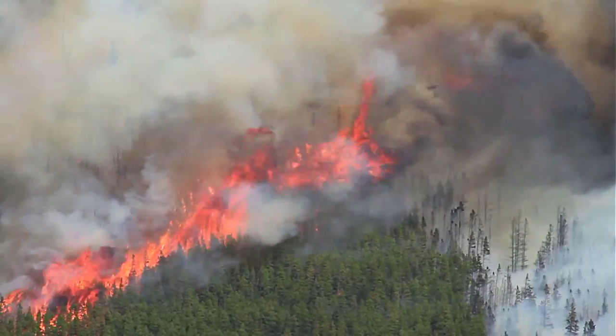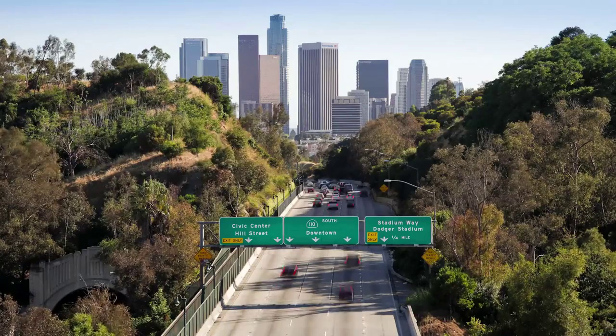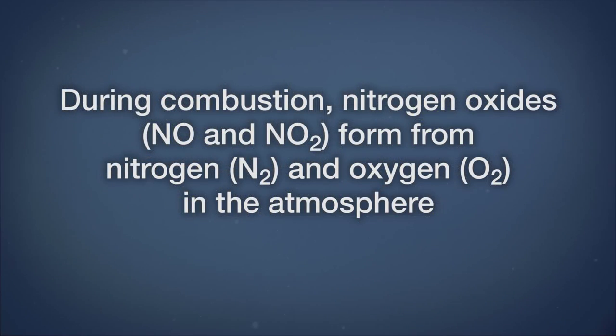Humans perturb the nitrogen cycle in a number of ways. Whenever combustion occurs in the atmosphere, whether from natural processes or human-caused processes, nitrogen oxides form from the nitrogen gas and oxygen gas in the atmosphere. These nitrogen oxides undergo transformations in the atmosphere and then the nitrogen is transported via the hydrologic cycle to plants and soils.